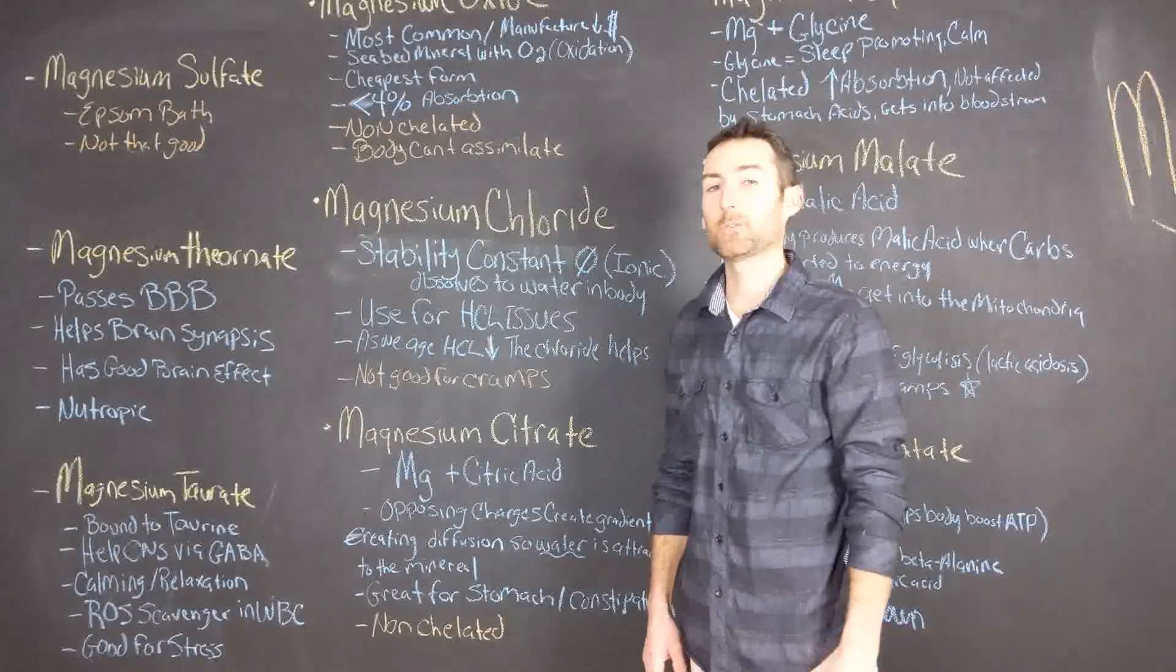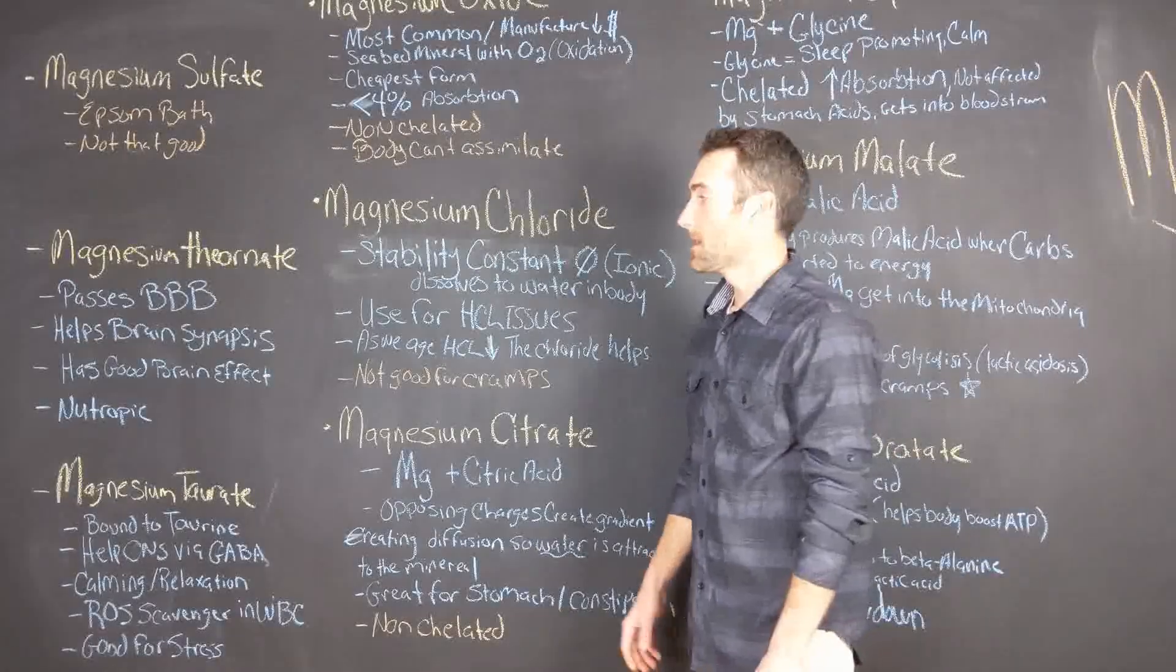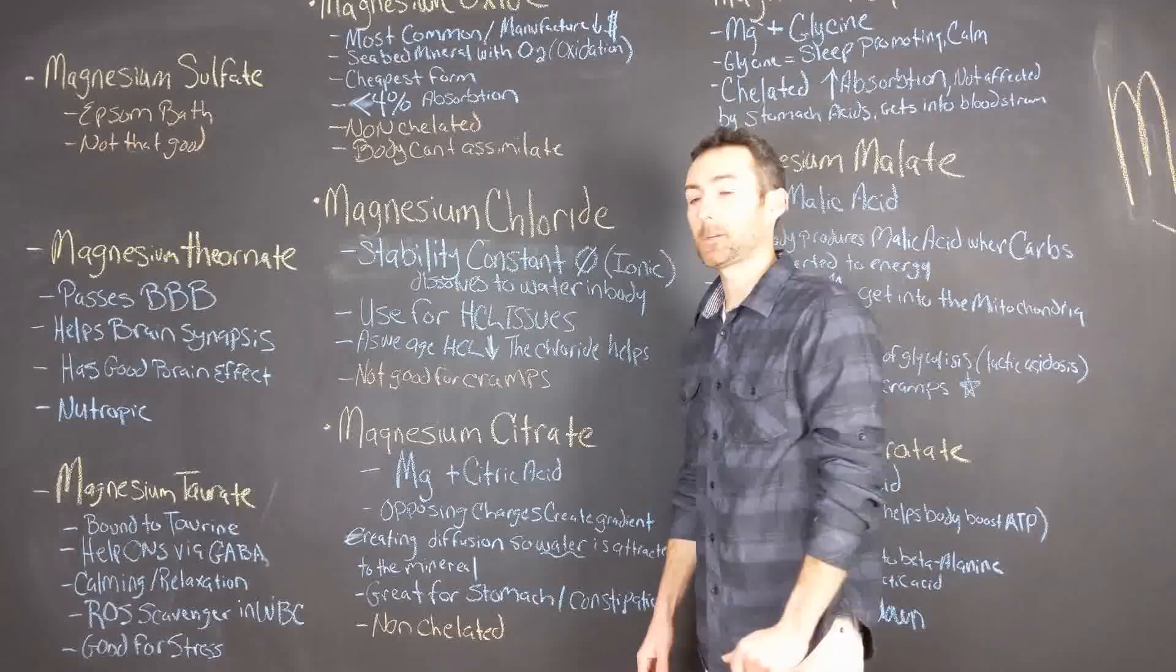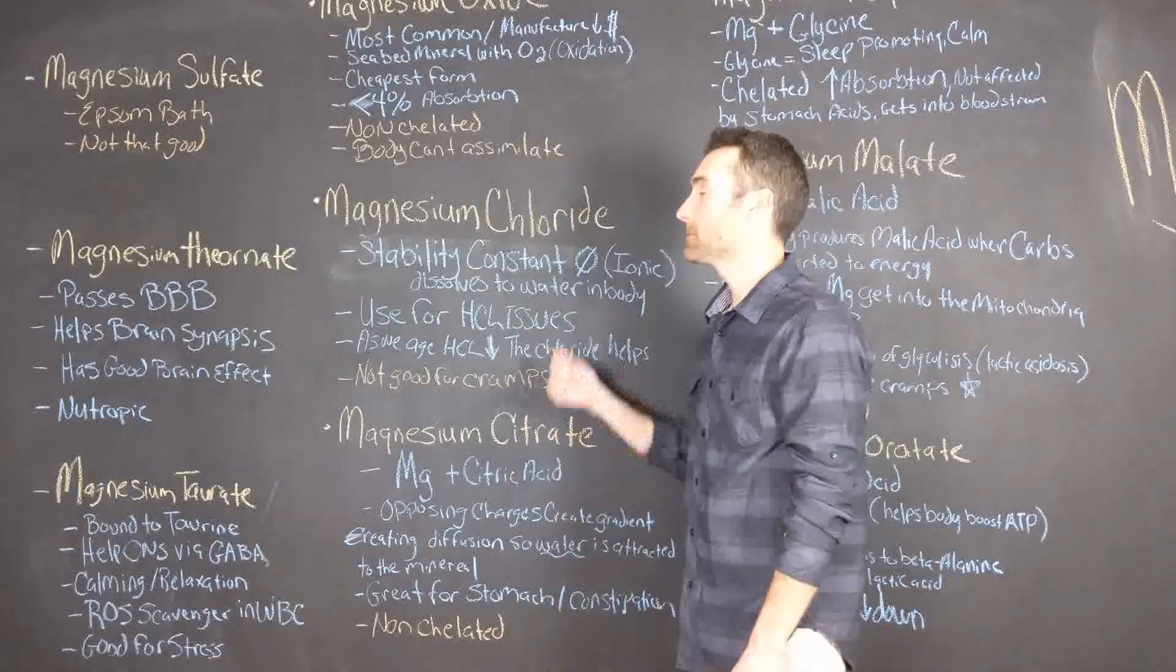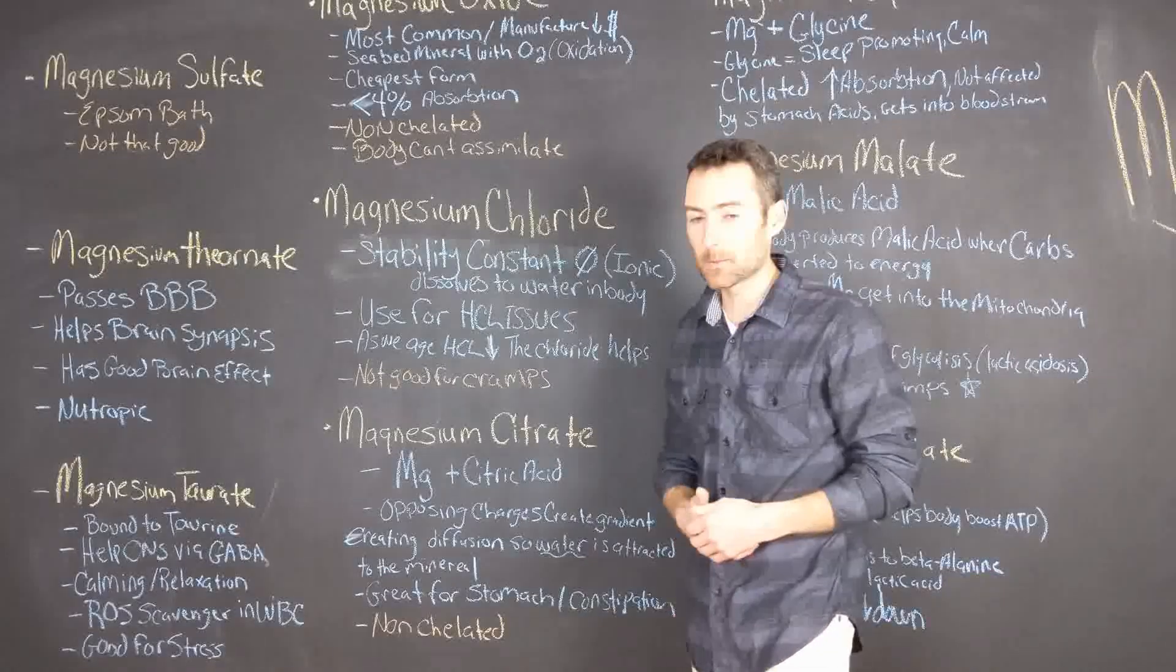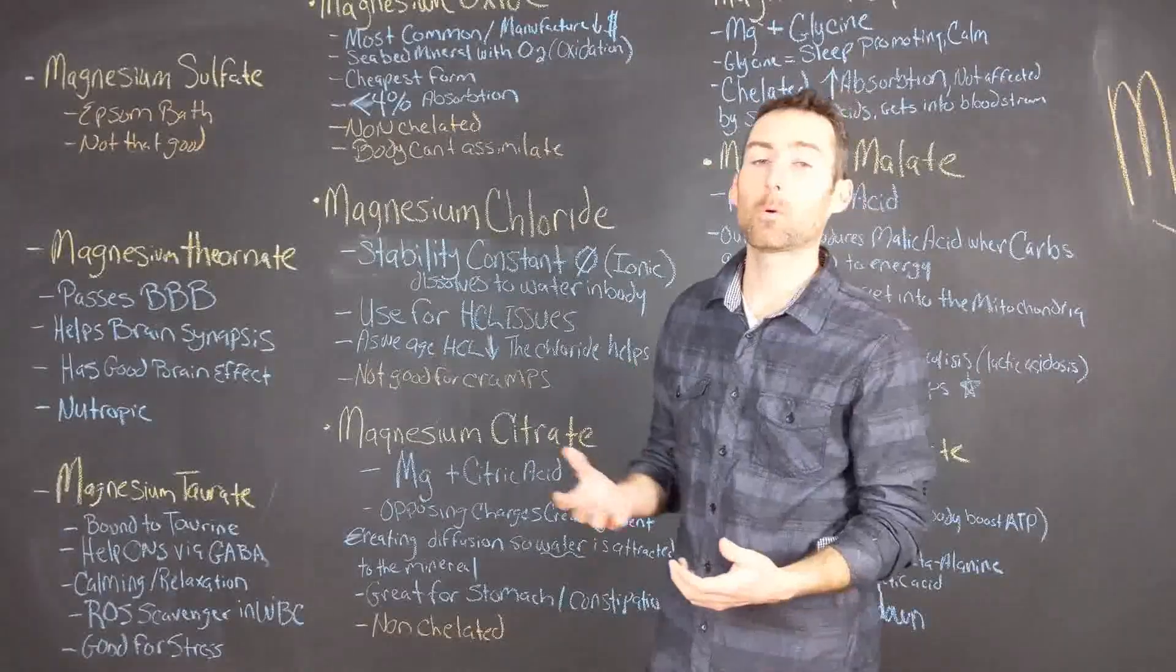Let's talk about the next two forms of magnesium. I think both of these forms of magnesium are really good. They have their benefits. The first is magnesium chloride. Magnesium chloride is magnesium bound to chloride.